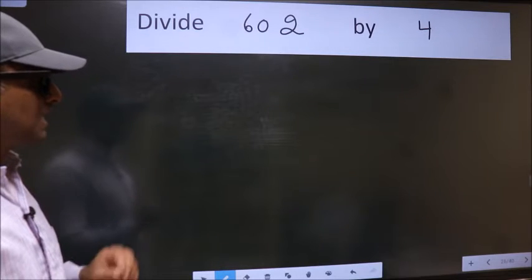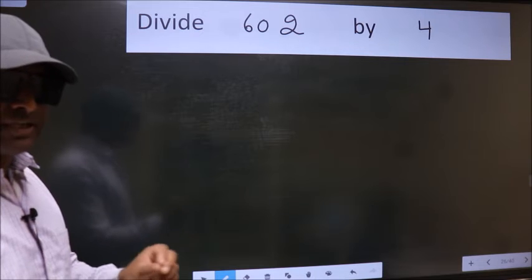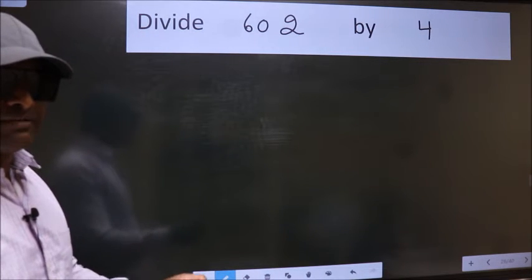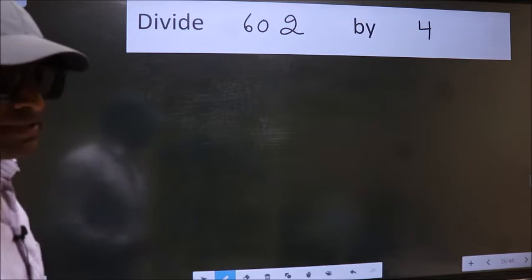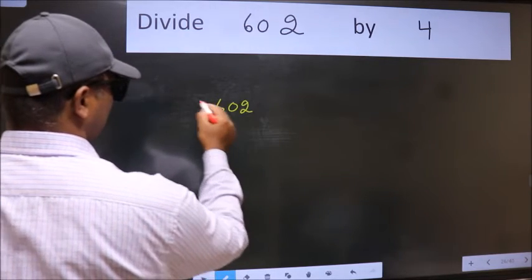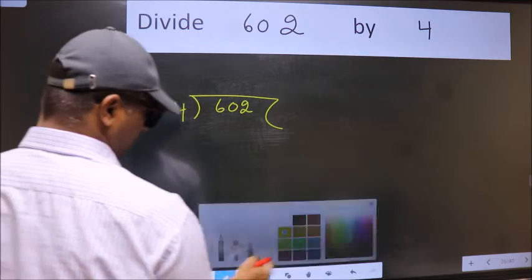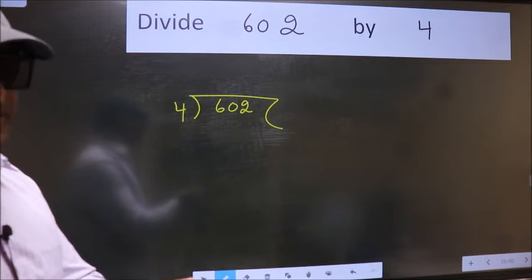Divide 602 by 4. While doing this division, many do this mistake. What is the mistake that they do? I will let you know. But before that, we should frame it in this way. 602 here, 4 here. This is your step 1. Next.